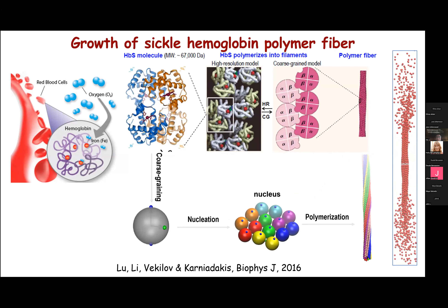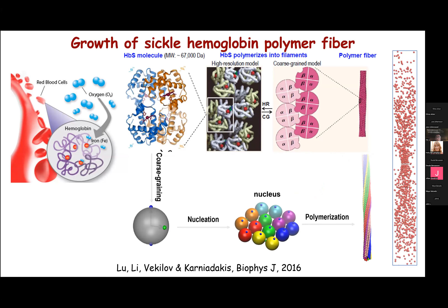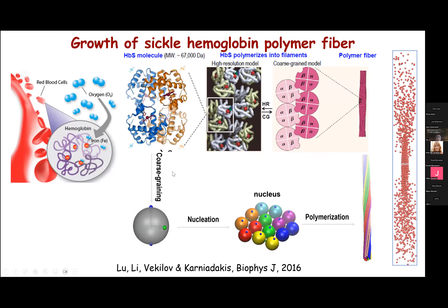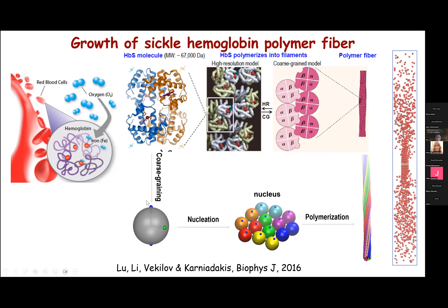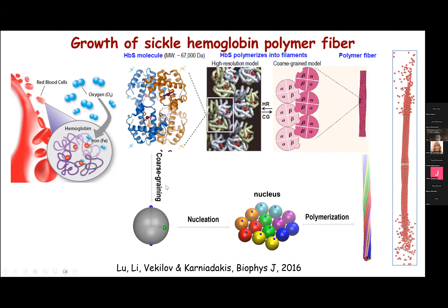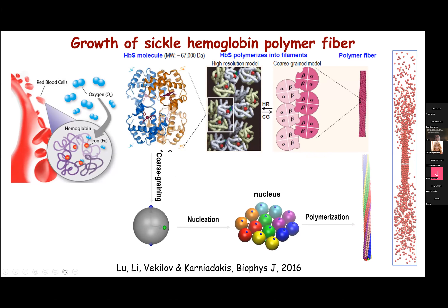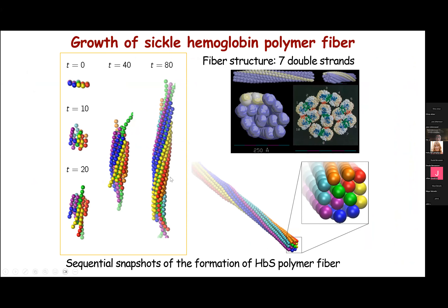To understand polymerization of sickle hemoglobin into fibers, we developed a computational model. In one of my previous works, we use a particle-based model to simulate the polymerization of hemoglobin into fibers. We use coarse-grained particles to represent hemoglobin, assign different binding sites on the particle surface, and simulate nucleation and subsequent polymerization into a fiber. By properly designing the binding sites and bond orientations between particles, we can reproduce the structure of the double-strand hemoglobin chain twisted structure observed in macroscopic experiments.